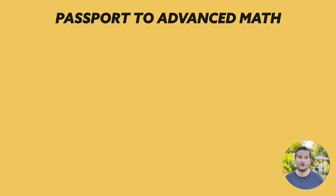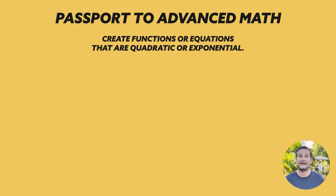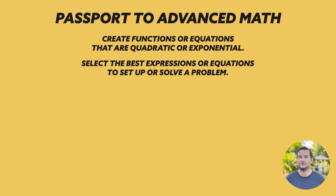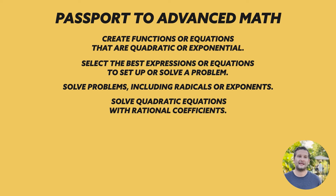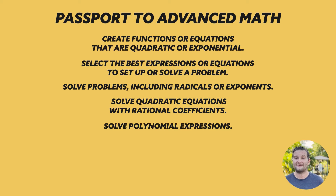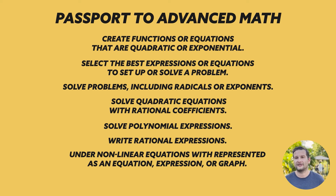For Passport to Advanced Math, there will only be six questions, but they'll be a little more difficult and include more complex equations or functions. The types of questions include creating a quadratic or exponential function or equation that models a context, determining the most suitable form of an expression or equation to reveal a particular trait, and creating equivalent expressions involving rational exponents and radicals — including simplifying or rewriting them in other forms.